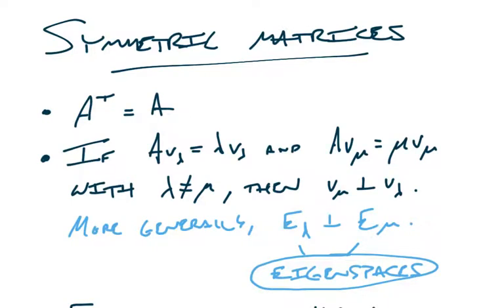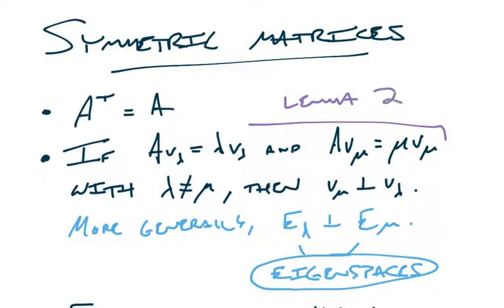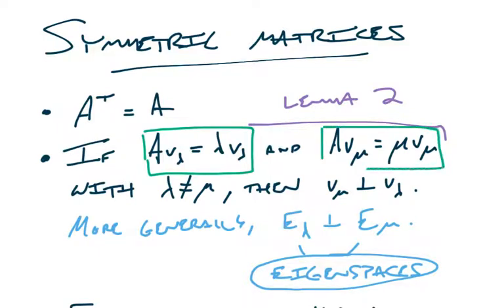I want to get to this super important theorem that I teased at the end of the last video regarding symmetric matrices and their eigenvalues and eigenvectors. To give a quick recap: we're talking about real symmetric matrices, so A transpose equals A. The big result from the last video says that if V_lambda is an eigenvector for A with eigenvalue lambda, and V_mu is another eigenvector with a distinct eigenvalue mu, then V_mu and V_lambda are orthogonal.